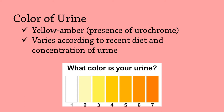Dark urine may indicate dehydration, while red urine indicates the presence of red blood cells, which might also be a sign of kidney damage and disease.